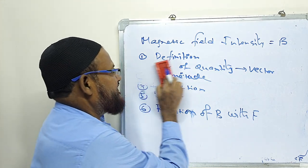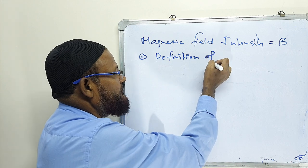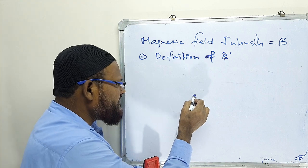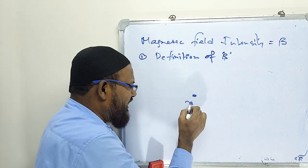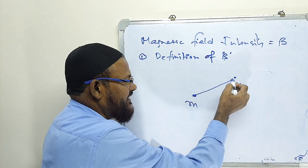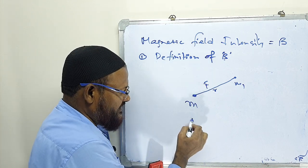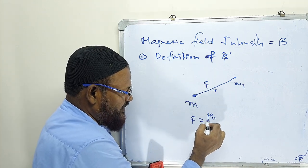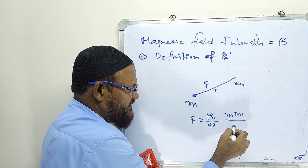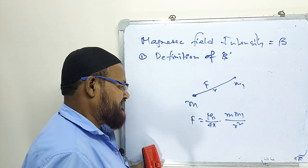Please see the definition. What is B? Magnetic field intensity. Here is one pole, another pole is here. Here is the Coulombic force: F equals mu naught divided by 4 pi, M times M1, divided by R square.